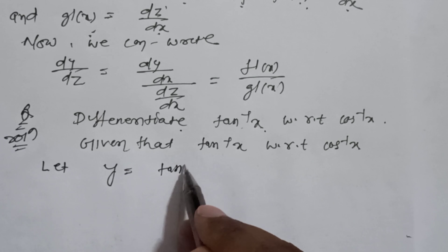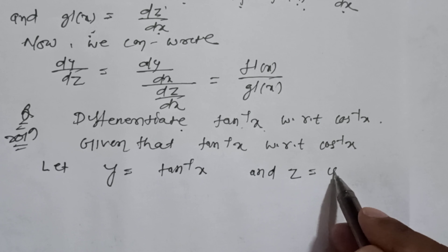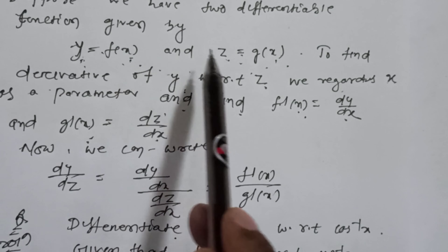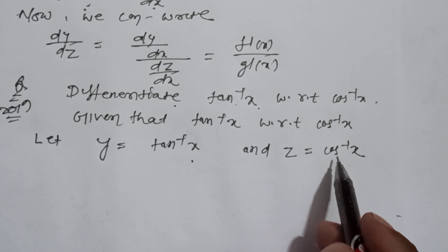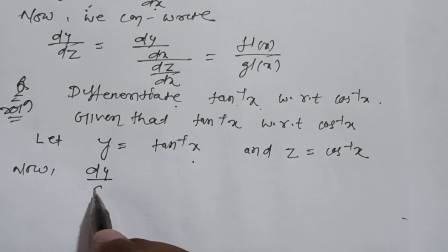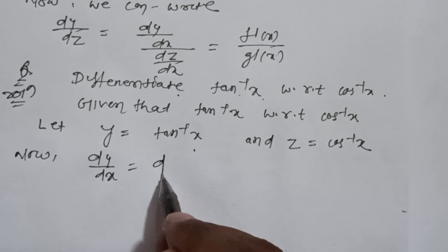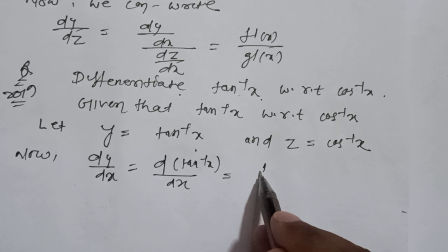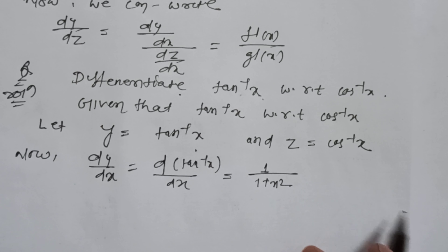Let y = tan⁻¹x and z = cos⁻¹x, since these are two different functions. So y = f(x) and z = g(x). Here y = tan⁻¹x and z = cos⁻¹x. Now dy/dx = d(tan⁻¹x)/dx = 1/(1 + x²).